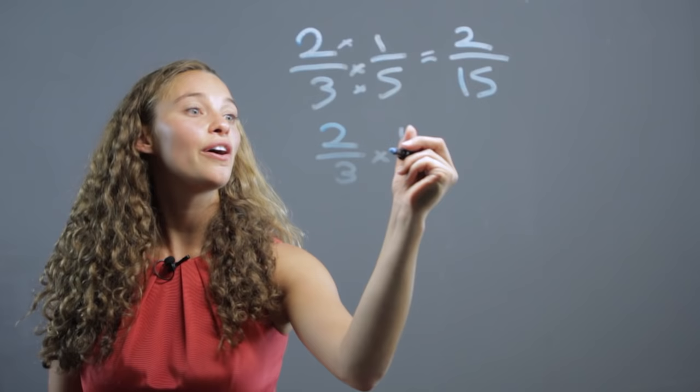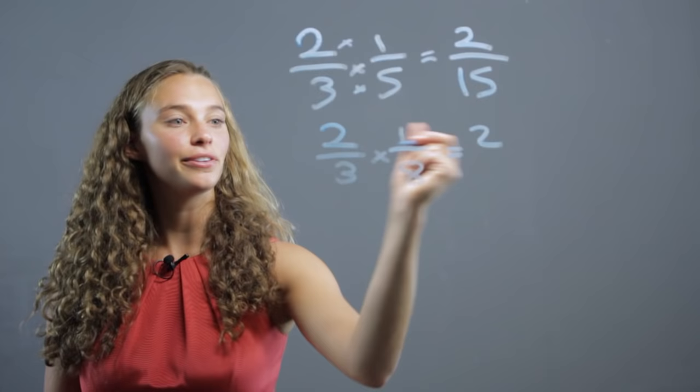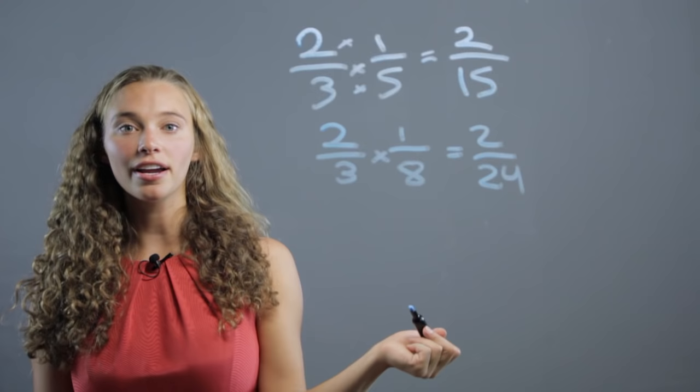So, let's look at 2 thirds times 1 over 8. We have 2 times 1 is 2, 3 times 8 is 24.